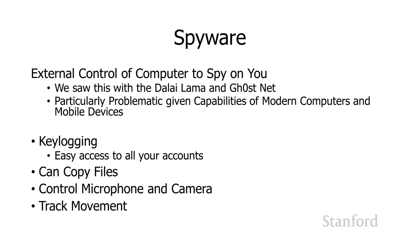That information will all be sent over the network to the attacking person. Spyware can also copy files — for example, financial information on your computer can be taken and sent somewhere remotely. On a modern computer or mobile device, spyware can also turn on the microphone and listen to what you're saying in a room, turn on the camera, and because modern mobile devices track your movements, it can be used to track you.